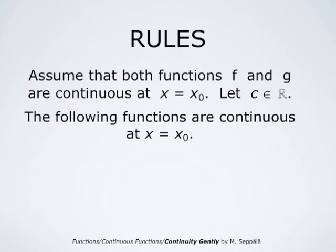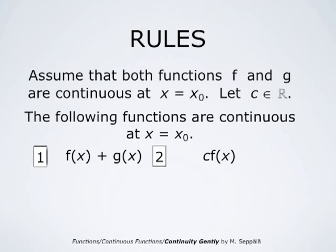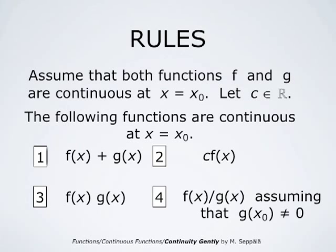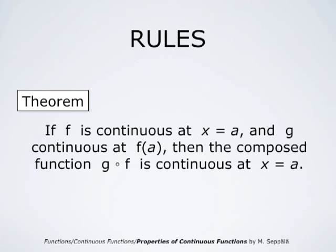If f and g are both continuous at x equals x₀ and c is a real number, then the following functions are also continuous at that point: f(x) plus g(x), c times f(x), f(x) times g(x), and f(x) divided by g(x), assuming g does not equal zero at x₀. Further, if f is continuous at x equals a and g is continuous at f(a), then the composed function g composed with f is continuous at x equals a.